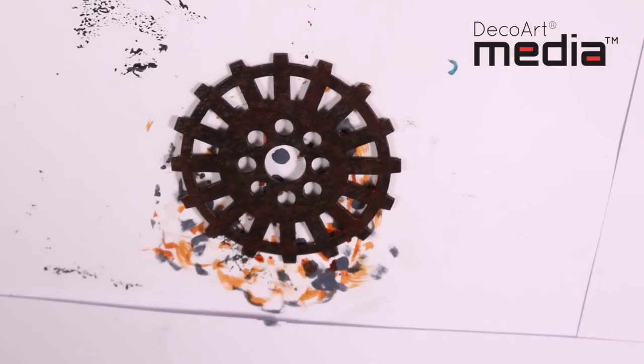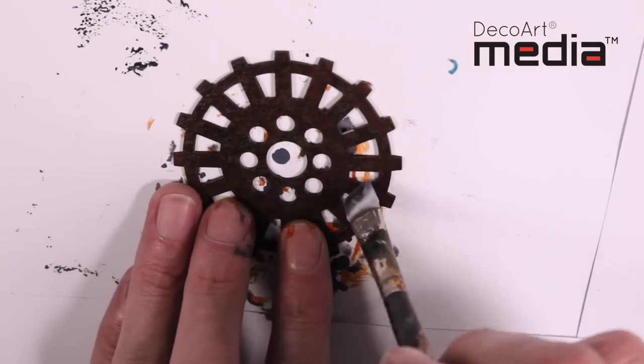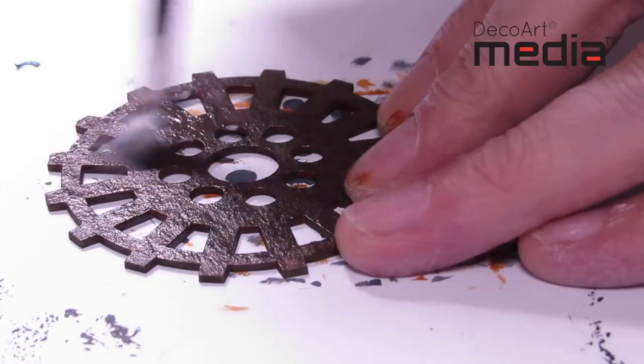Finally, I'm going to apply one coat of the Media Ultramat Varnish. This will remove the natural sheen from the pigments.